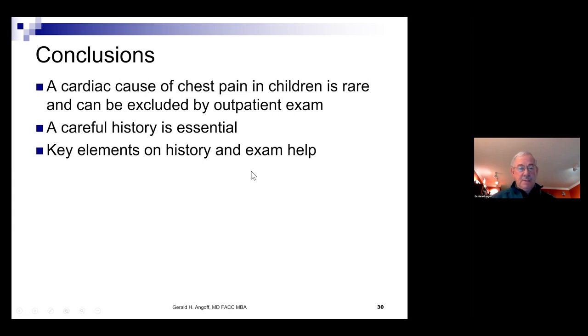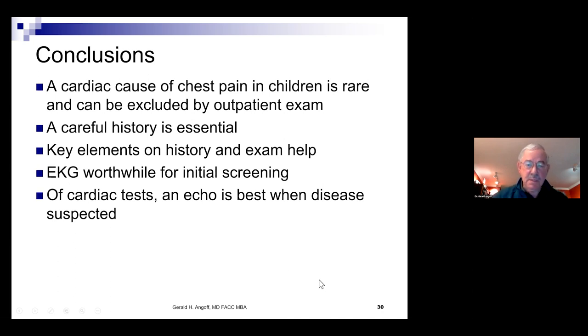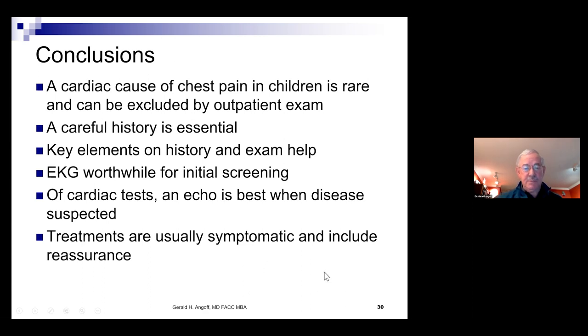There are key elements on history and exam that help, that might be triggers for further evaluation, but remember the chances of finding something statistically are low. For screening, an EKG is the most worthwhile test for an initial screen. Of the cardiac tests, an echo is best when disease is suspected based on a careful history, and I would add EKG after that. But remember, most of those echoes are going to be normal or show some incidental findings, which will be a distraction.